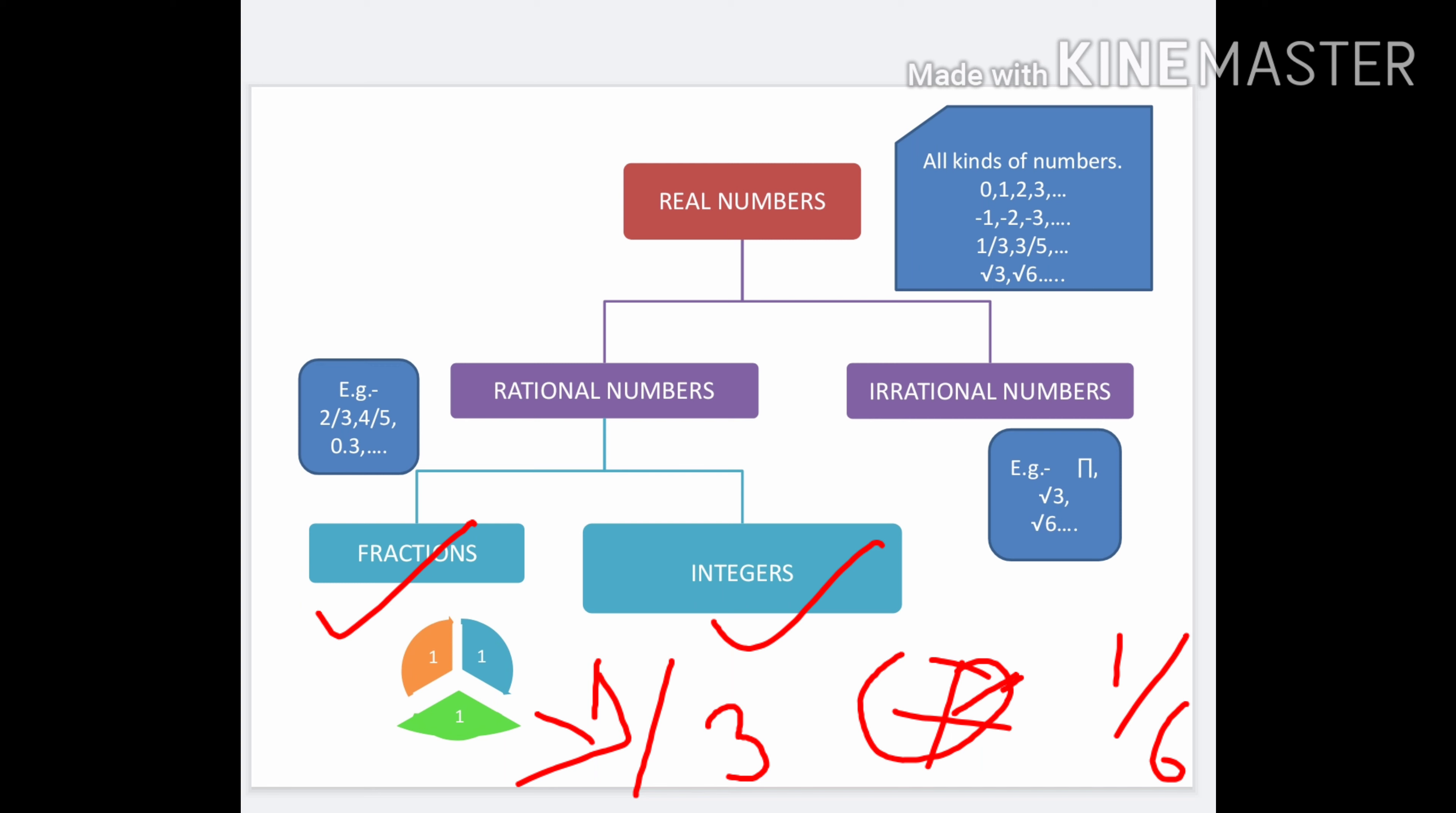Fraction is a part of a whole. For example, I have shown you a circle divided into 3 parts: 1, 2, and 3, so this can be written as 1 upon 3. Similarly, like pizza which is cut into 4 or 6 pieces, meaning one part of a whole like 1 upon 6. These are fraction numbers.